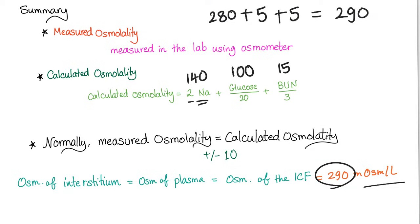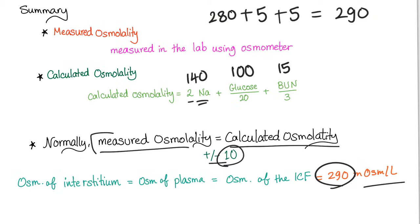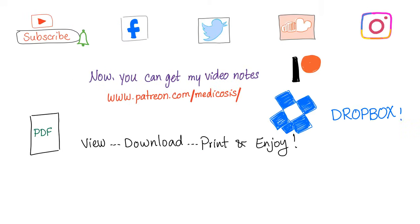It could be that measured osmolality is higher than calculated osmolality by 1, 2, 3, or 4 points — but if the difference is more than 10, Houston, we have a serious problem. In the next video, we're going to talk about the osmolality gap.